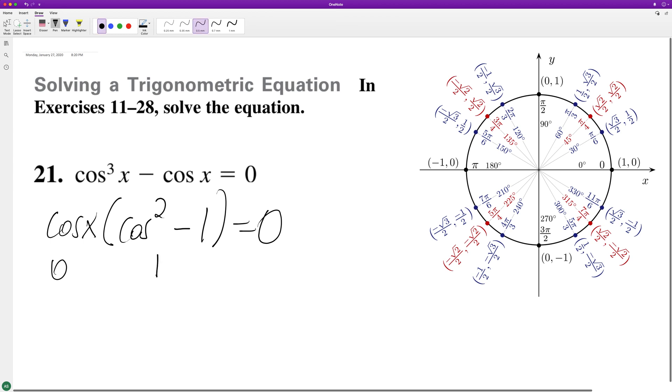Cosine equals 0 at pi over 2 and 3 pi over 2. Then for cosine squared equals 1, solving for the inside there, take square root of both sides. Cosine is equal to plus or minus 1, so it looks like 0 or pi.